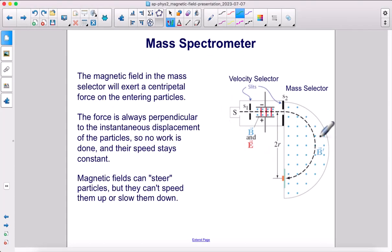The magnetic field in the mass selector will exert a centripetal force on the particles that are entering. The force exerted is always perpendicular to the instantaneous displacement of the particles, so no work is done, and therefore their speed stays constant. They enter uniform circular motion. Remember, magnetic fields can steer particles into circular motion, but they can't speed them up or slow them down.